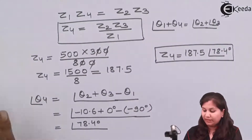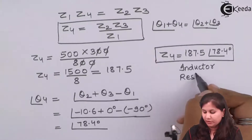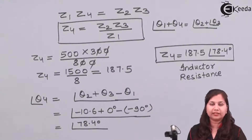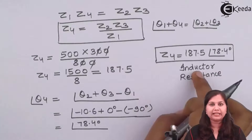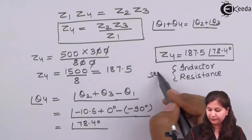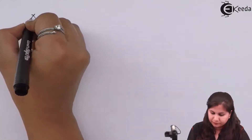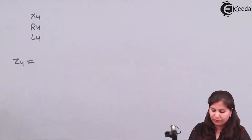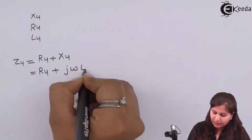A positive phase angle means the unknown impedance is an inductor and a resistance. Since the phase angle is positive and we are told to consider arm CD as a series circuit, Z4 is a series combination of a resistance and an inductor.